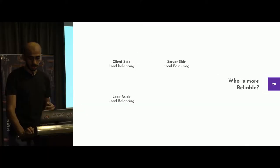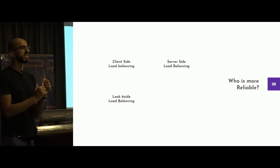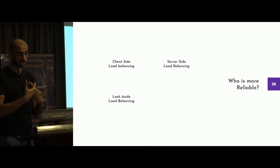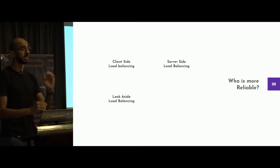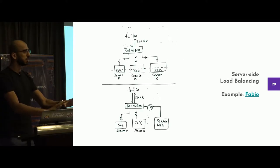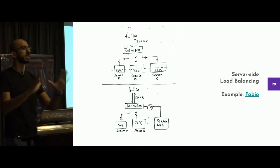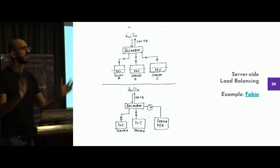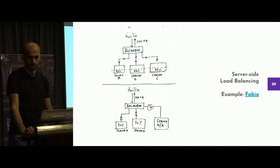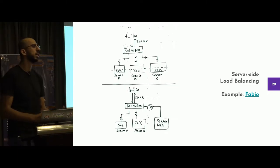Now that we know what load is and how a load balancer works — which technique is actually the best? Should I use a client-side load balancer, a server-side load balancer, or a look-aside load balancer? Server-side load balancing is dead simple — everybody has been using Nginx, Apache, HAProxy, or the fancy ones like Kong and Traefik at some point. A request comes in, somebody decides for you — hey, this is the best server you should go to, please go there, job done.